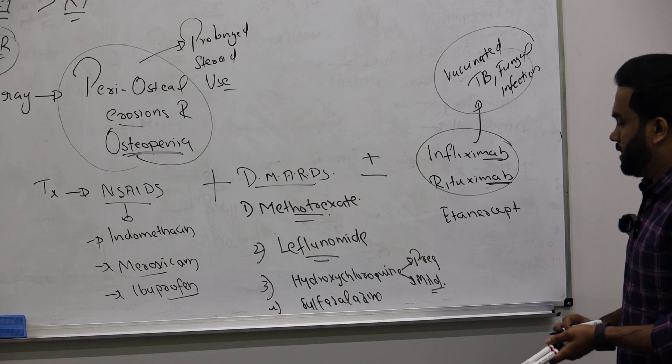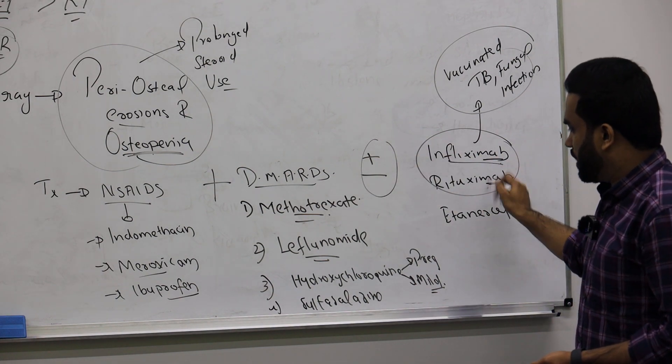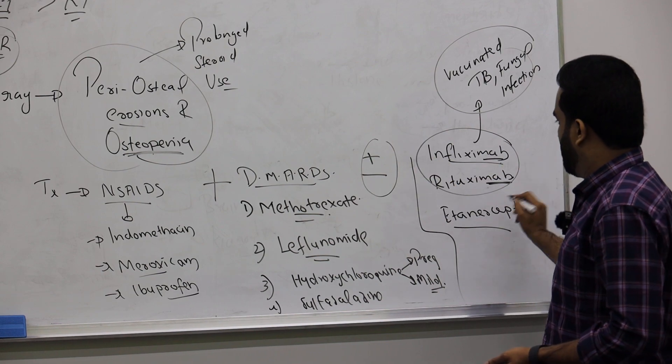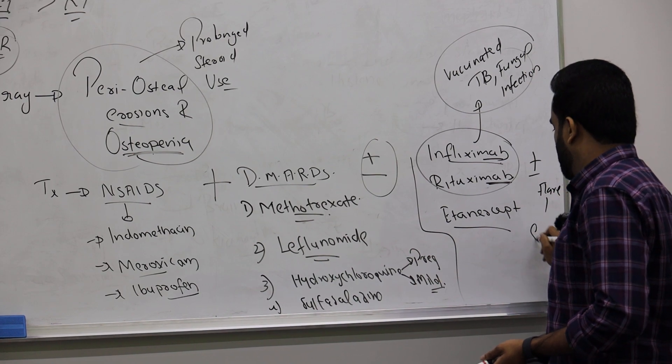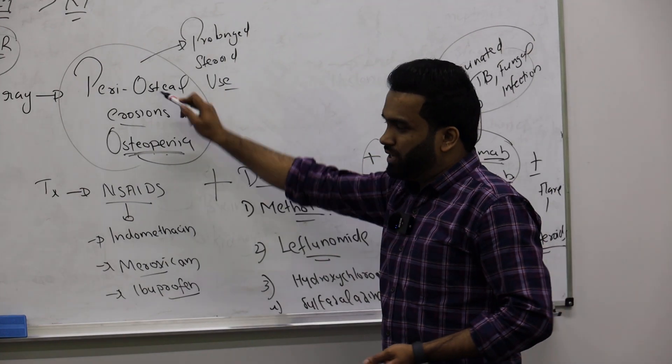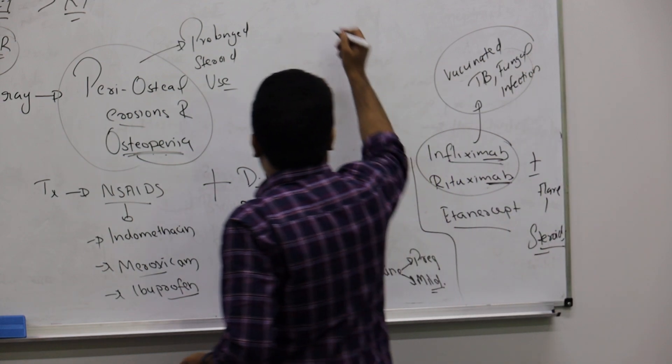Plus or minus, if they are so severe, add these monoclonal antibodies. And for flare, for sure, if there is flare, acute symptoms, you will add steroids. But prolonged use of steroid will cause a lot of side effects, as I told you—osteopenia and all. Then there's something called Felty syndrome.